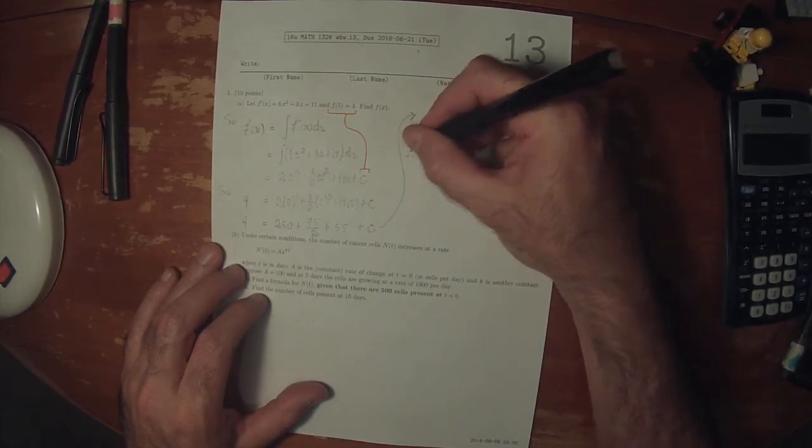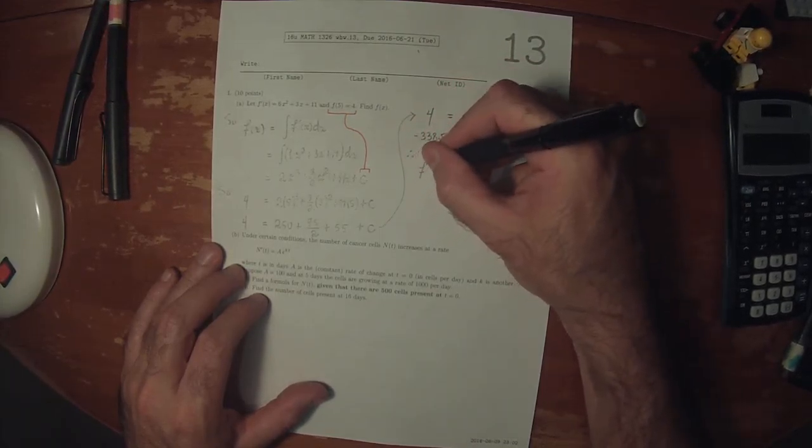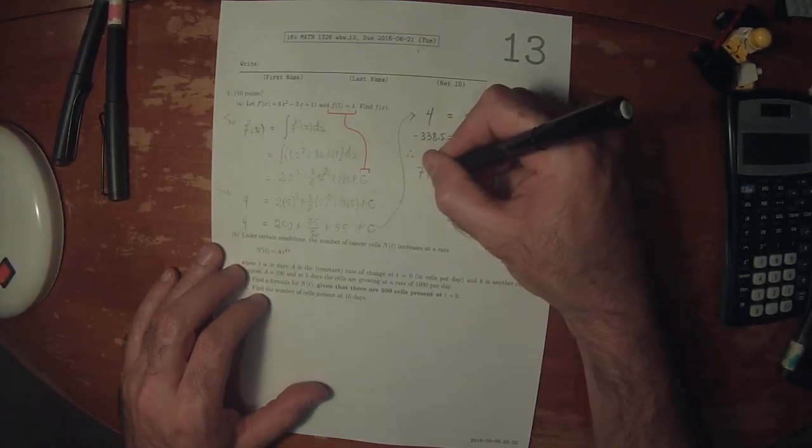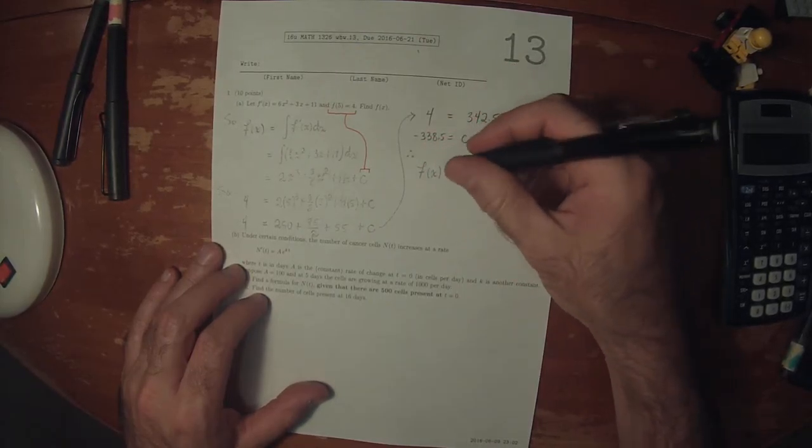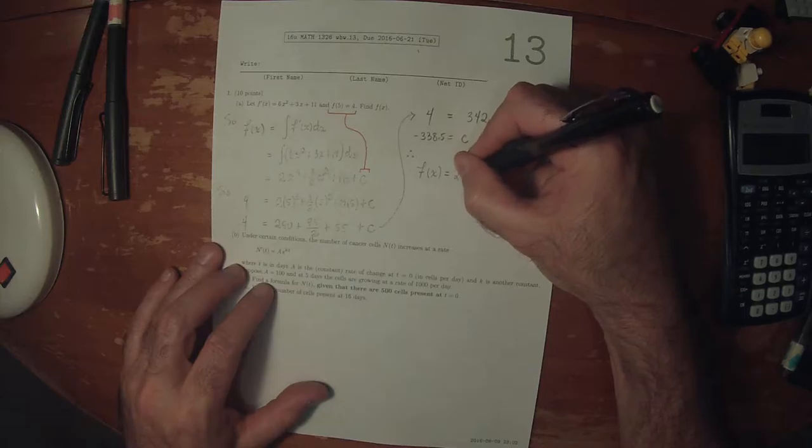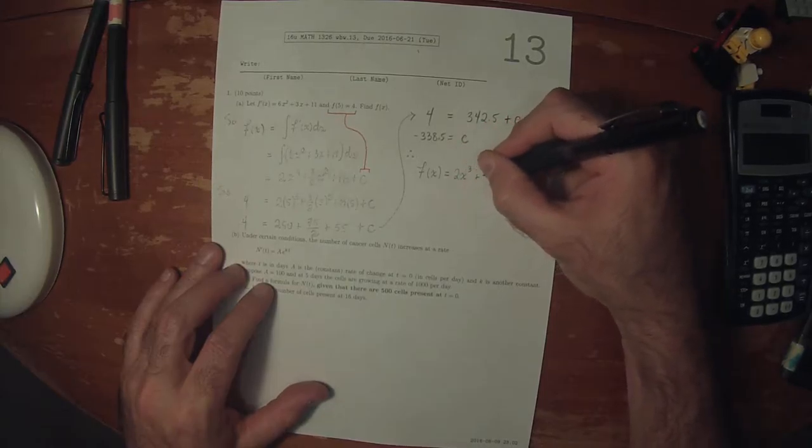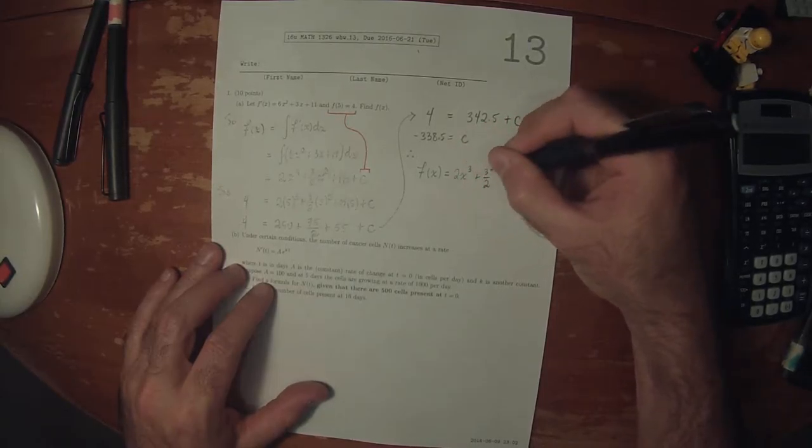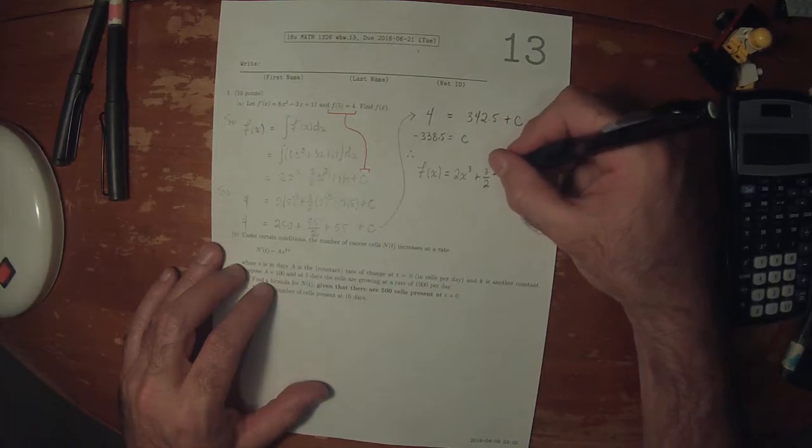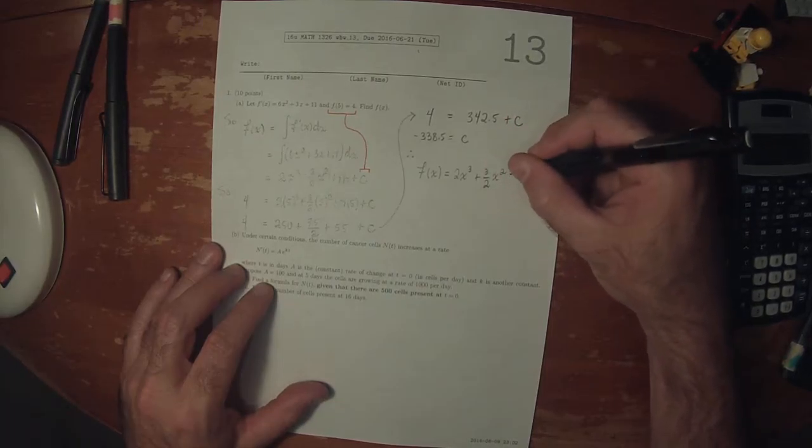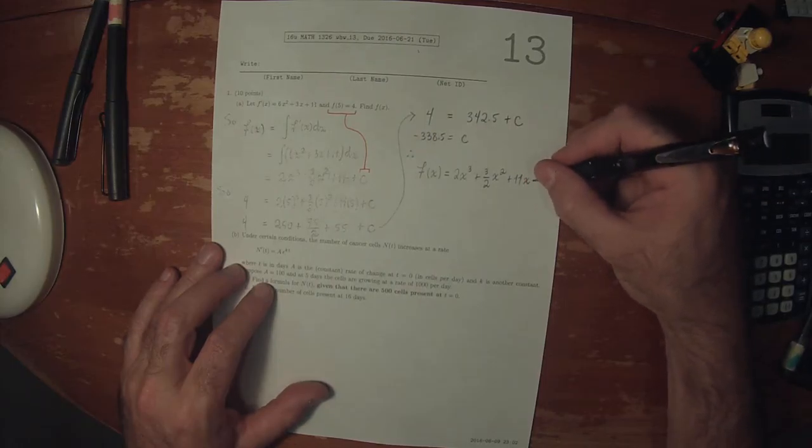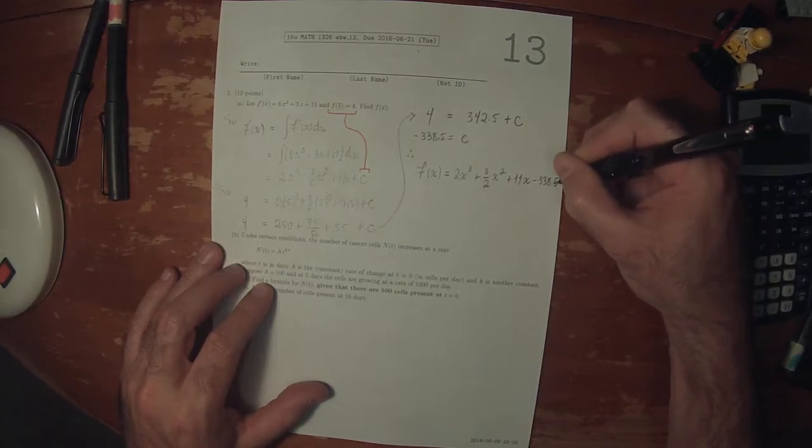Therefore, the answer to the exercise is that the original function is 2x cubed plus 3 halves x squared plus 11x minus 338.5.